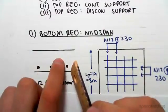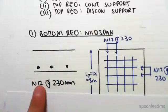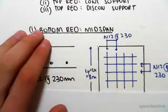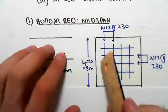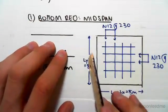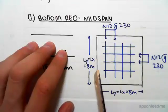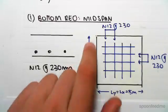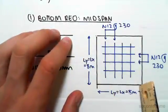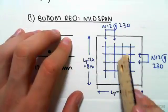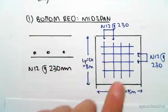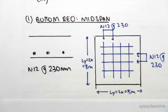In the previous videos we found that the spacing required is N12 at 230 millimeters. Now in this case, because we're dealing with a square slab, perfectly square, ly equals lx. It doesn't matter - ly and lx are just the short and long span, but because there's no short or long span, they're both the same thing. So we have an 8 by 8 meter span, which means that in both directions the spacing will be N12 at 230.